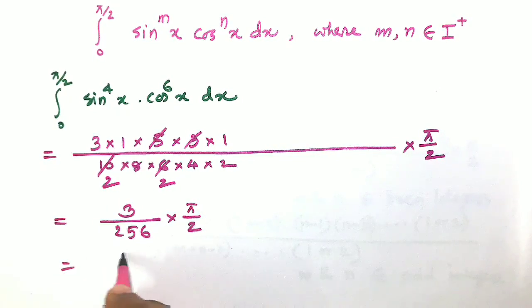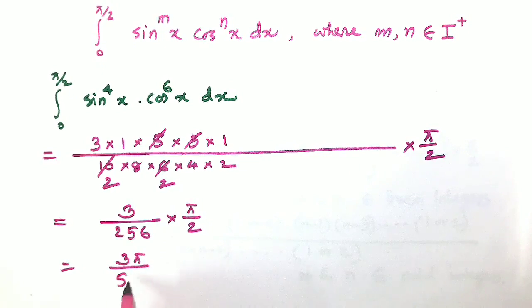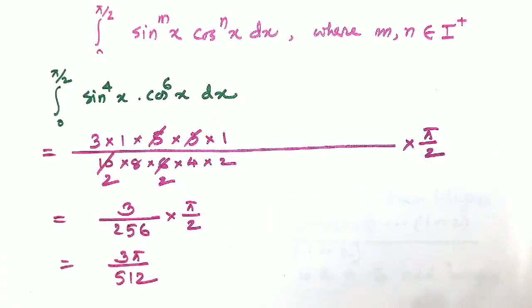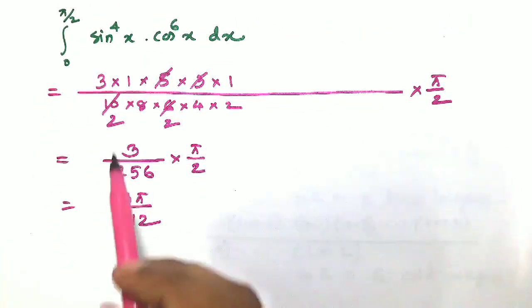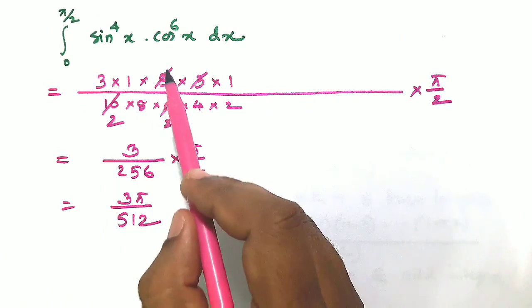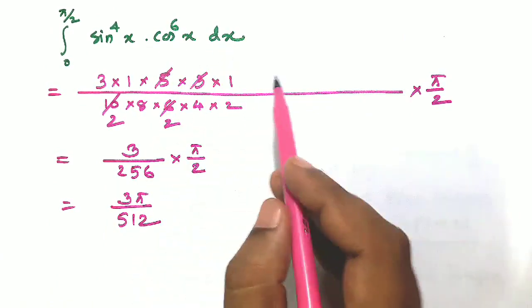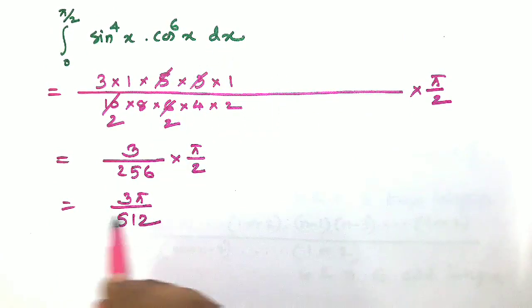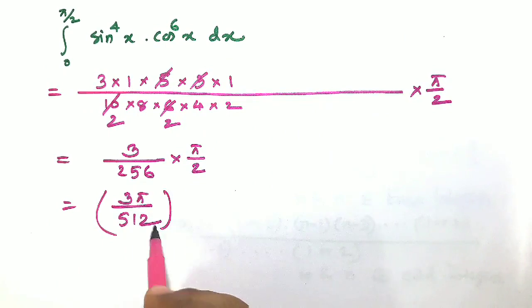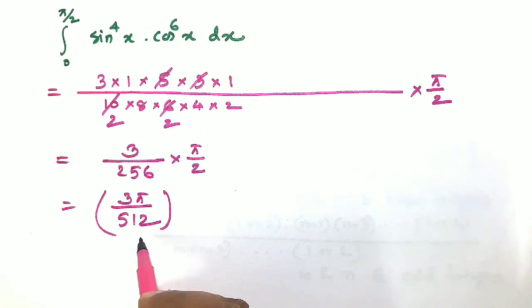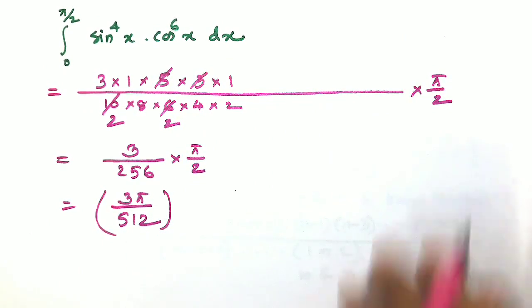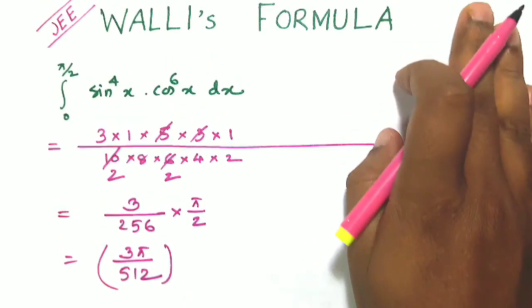So the final result is 3 pi upon 512. Therefore, integration from 0 to pi by 2 of sin to the power 4 x into cos to the power 6 x dx equals 3 pi upon 512, using the Wallis formula.